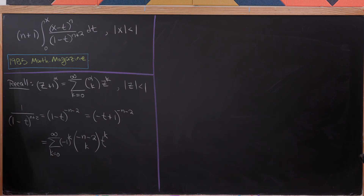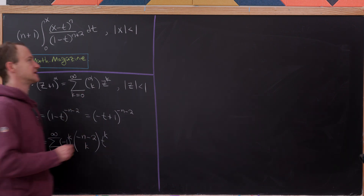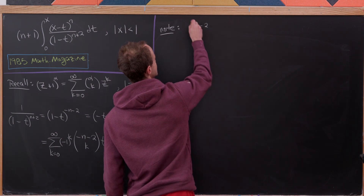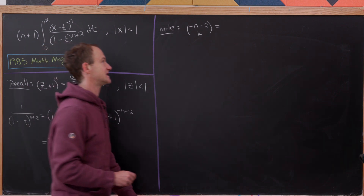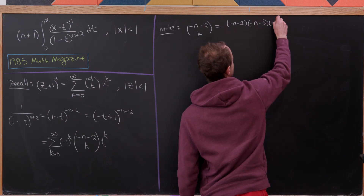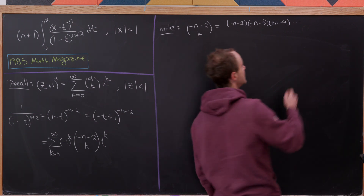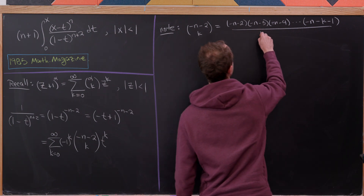The classical factorial formula for binomial coefficients only works for non-negative integers. For the general case, minus n minus 2 choose k is a descending product of k terms in the numerator starting at minus n minus 2: that's minus n minus 2, minus n minus 3, minus n minus 4, down to minus n minus k minus 1, all over k factorial.